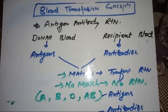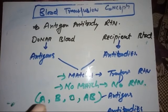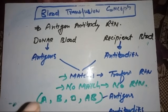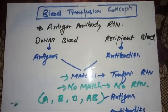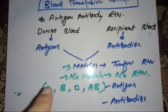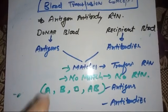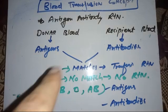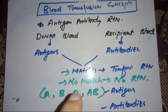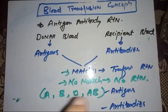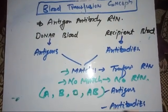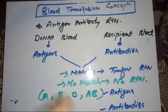The key concept is: if a patient has a certain antigen, they have no antibodies against that antigen. So A has antibodies against B because it has no B antigen. B has antibodies against A. O has antibodies against both A and B because it has no antigen. AB has no antibodies at all.